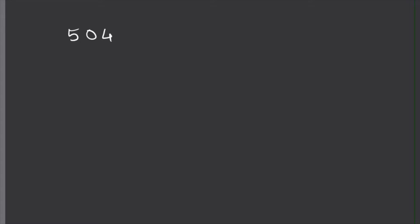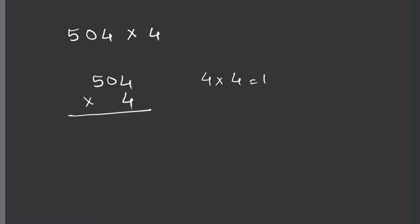Let's do one more example: 504 times 4. The numbers are written side by side, so line this problem up — 504 times 4. Make sure these two 4s are lined up because they are in the ones place. 4 times 4 equals 16, so I write 6 here and carry the 1 to the tens place.